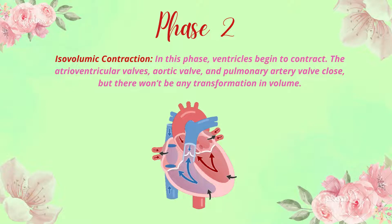Phase 2 is isovolumic contraction. In this phase, the ventricles begin to contract. The atrioventricular valves, aortic valve, and pulmonary artery valve all close, but there is no change in volume. That's why it is known as isovolumic contraction — the ventricles have just begun to contract and all the valves are closed.